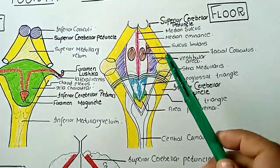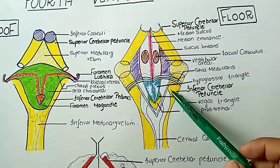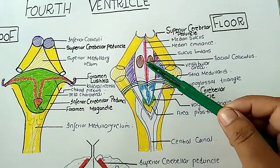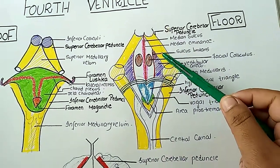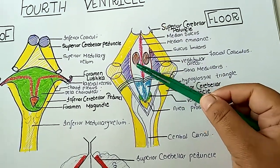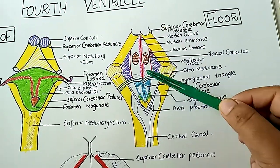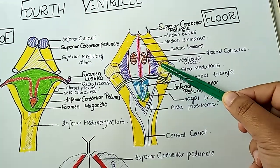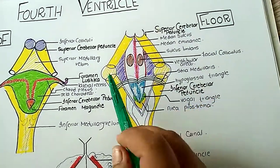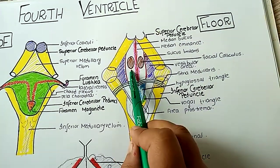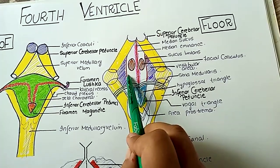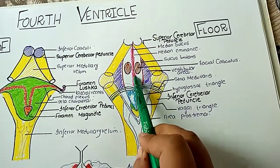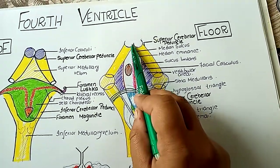Now let's move toward the floor of the 4th ventricle. The floor is posterior to the pons and medulla oblongata and anterior to the cerebellum. The floor is divided into 2 equal halves by a median groove known as the median sulcus.